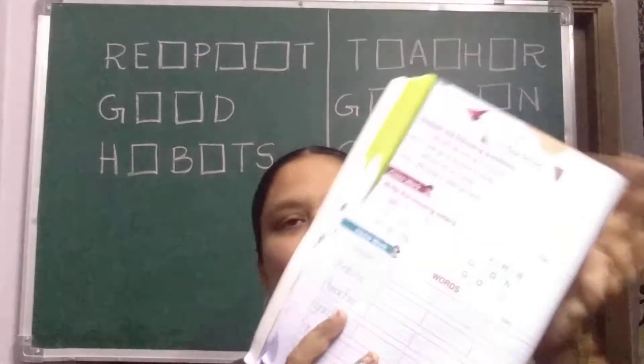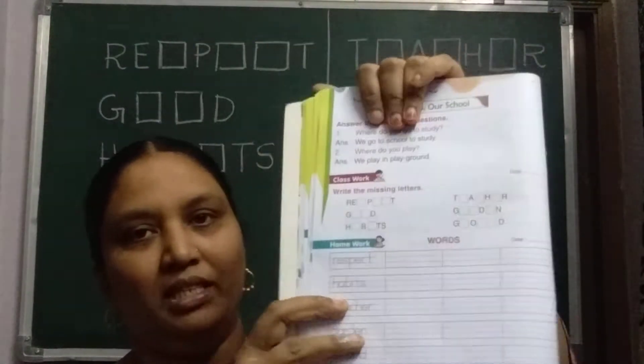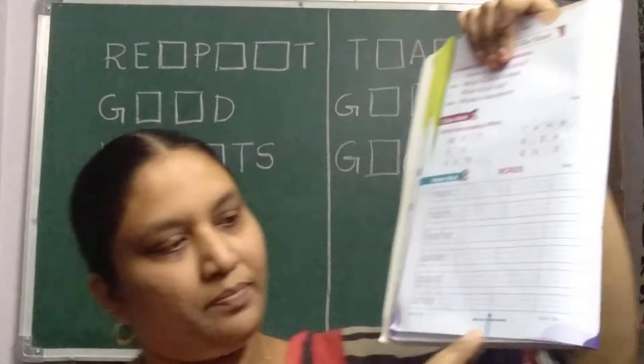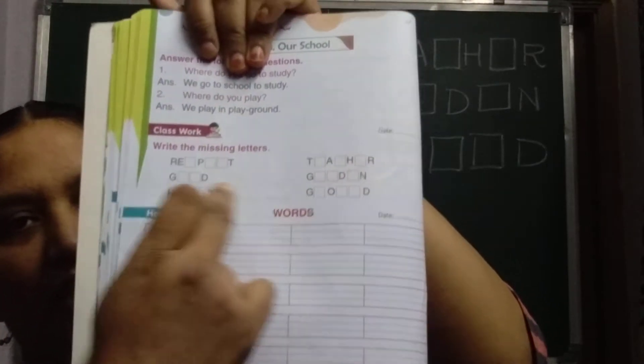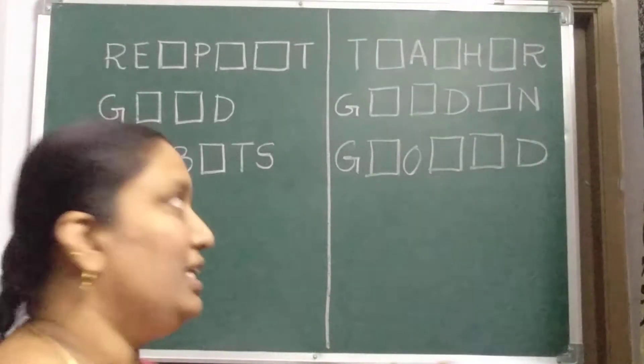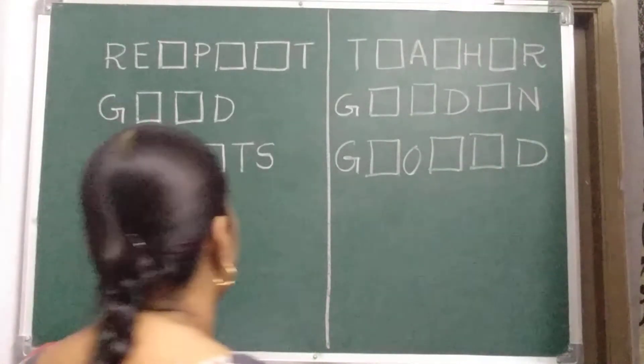Today, we will write these missing letters in our practice book, page number 38. Page number 38, these missing letters we should write today. So, first of all, you should write a date.